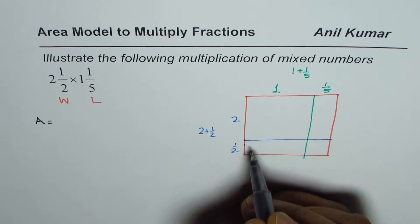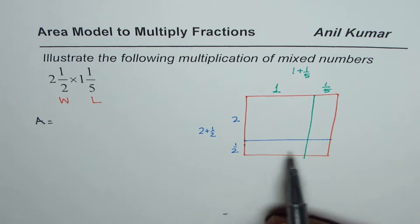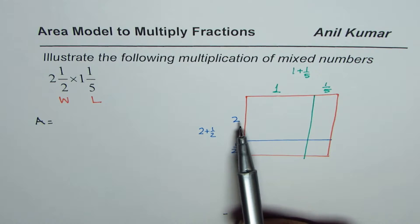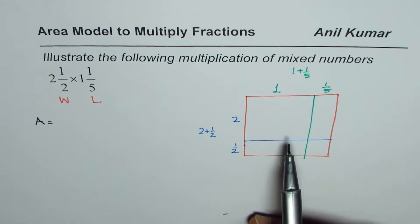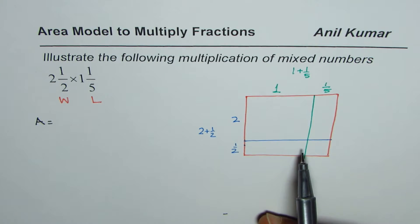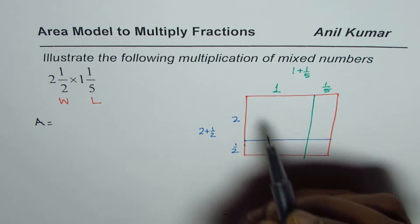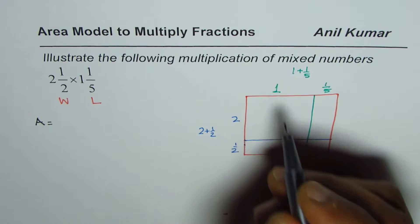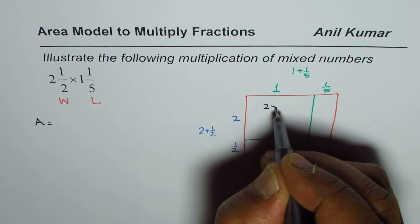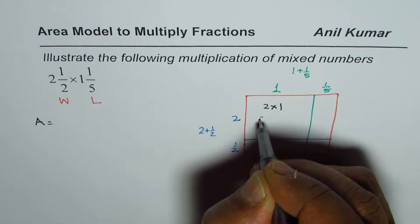Let's find the area enclosed here with the help of multiplying area of each length and width and adding them up. We'll add areas of small rectangles together to find total area. This big rectangle has area of 2 times 1, which is 2.